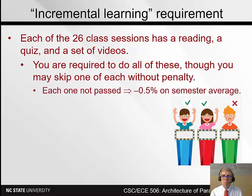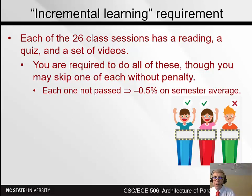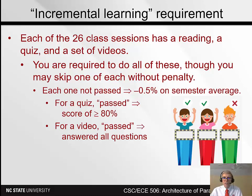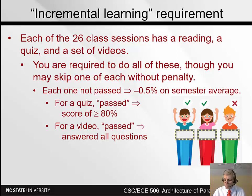If you don't do the quizzes you're supposed to, for each one not passed you lose 0.5% on your semester average. So if you skipped both the reading and the video for a particular class, you'd lose 1% from your semester average. For a reading quiz, you need to get a score of at least 80% to pass. For a video quiz, you just need to answer all the questions — whether the answers are right or wrong — we're not counting correctness this semester. It's just graded based on completion.